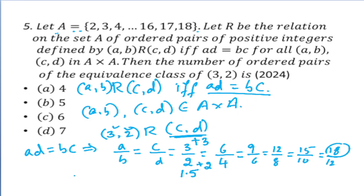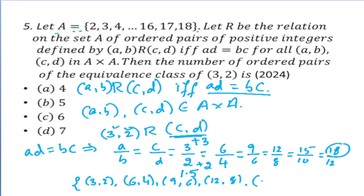The elements related to (3, 2) with the maximum value 18 are: (3,2), (6,4), (9,6), (12,8), (15,10), and (18,12). There are clearly 6 elements in this equivalence class, so the answer is 6. Friends, if you like this explanation, please like, share, and subscribe, and hit the bell icon. Thank you very much.